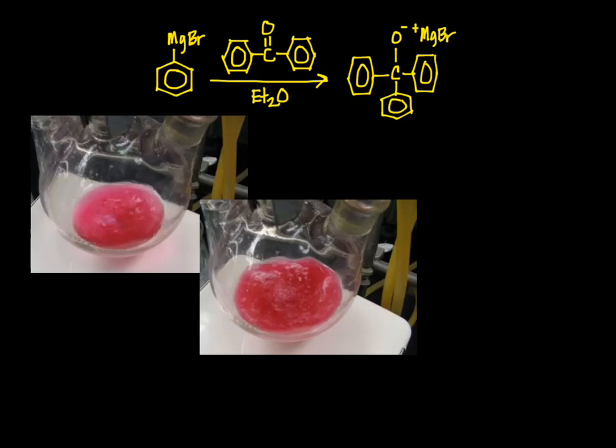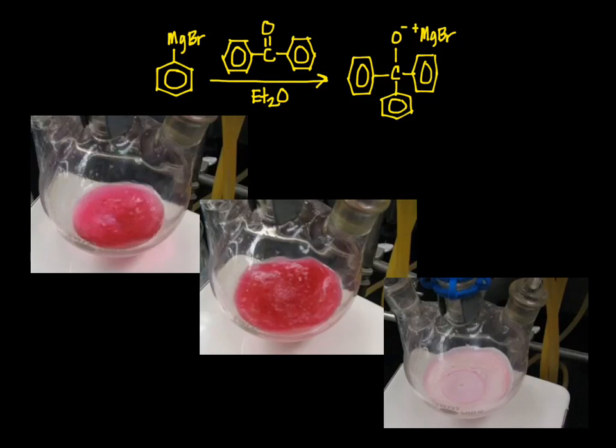Partway through the addition, you should see a white precipitate begin to form. If you look closely at this picture, there are faint swirls of white in the pink solution. At this point, the ether is saturated with the triphenyl methoxy anion, and it's beginning to precipitate out as the white magnesium bromide salt. As you continue, more and more of the salt precipitates until it appears to be one solid mass. It's not. It's just a lot of solid and a relatively small amount of ether.